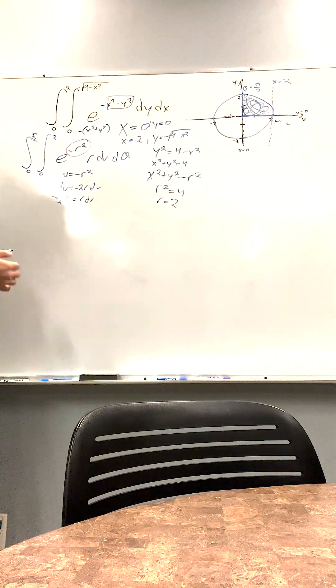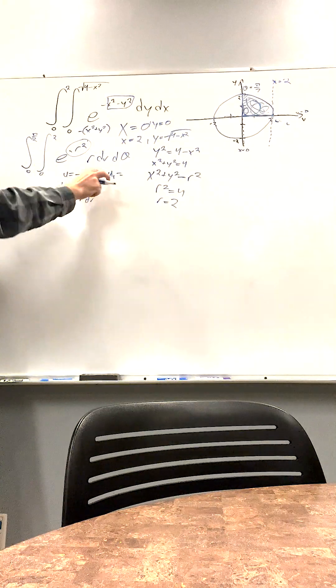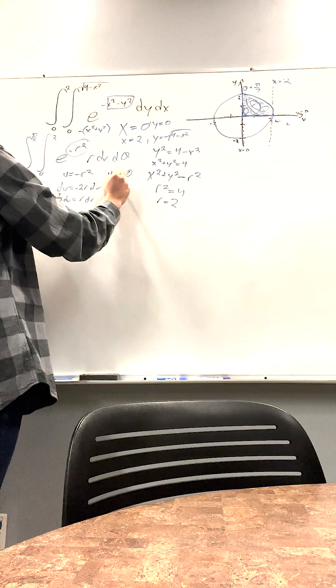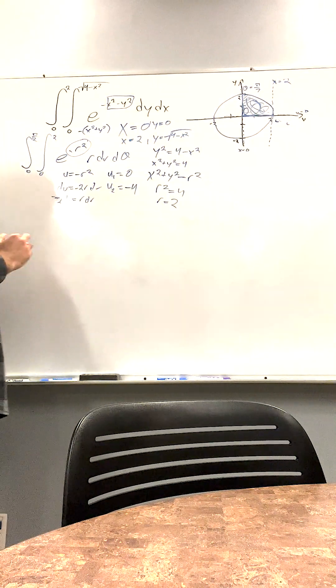And from here we can solve, but I'm going to reevaluate our bounds. So u1, this is 0. We plug this into here, we get 0. u2 is 2 plugged into our value of u, we get negative 4. Boom.